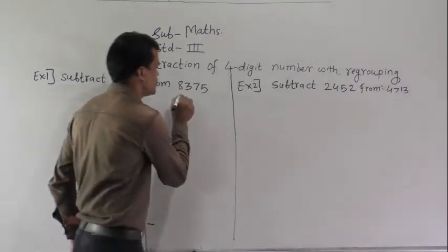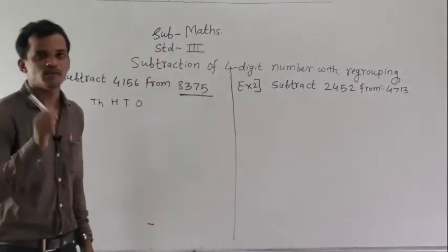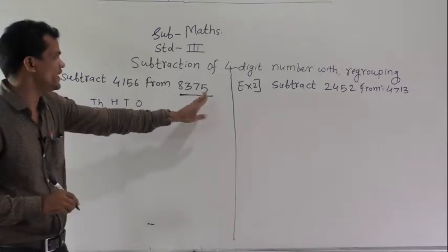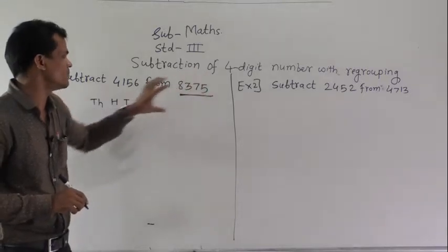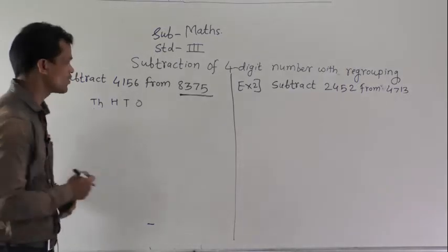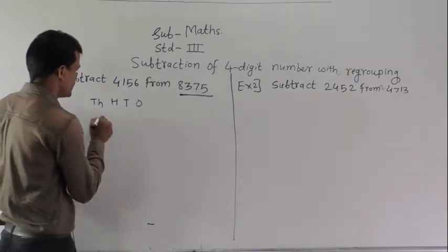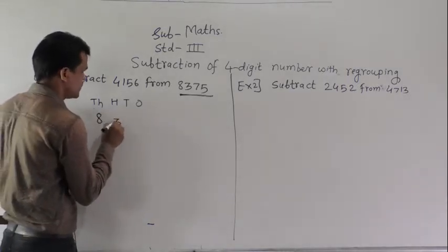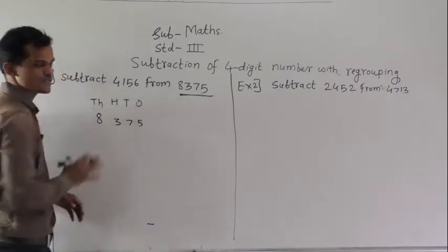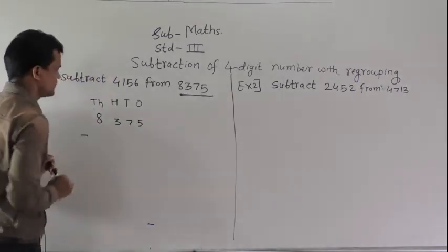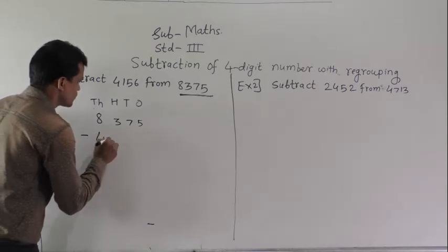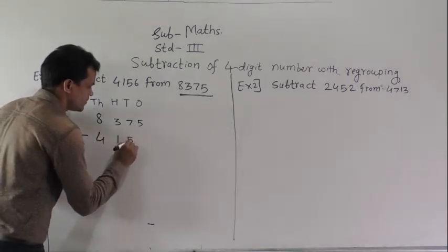One important thing: always subtract the smaller number from the bigger number. Write the bigger number on top and under that number write the smaller number. So write 8,375 on top and under that number subtract the smaller number 4,156.